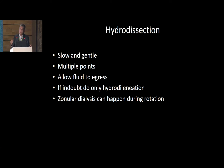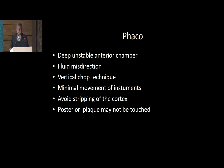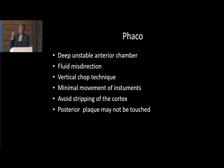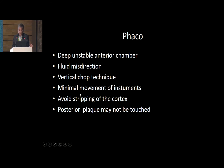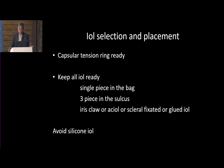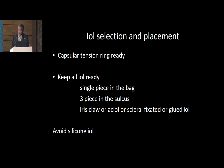Hydrodissection has to be slow and gentle, done at multiple points, and you must allow the fluid to egress so that you don't create too much pressure on the posterior capsule or the zonules. During phacoemulsification, you must keep a deep and stable anterior chamber and avoid deep unstable chambers. Sometimes fluid misdirection can occur — fluid can go through the zonules, go behind, and increase eye pressure. In such cases, take a 30-gauge needle, go into the pars plana, and slightly aspirate the fluid; the pressure comes down and you can proceed. There must be minimal movement of instruments and you should avoid slipping of the cortex. You have to decide which IOL you are going to put — keep a single-piece for in-the-bag implantation ready, a three-piece ready for sulcus implantation, and also an iris-claw or scleral-fixated or glued IOL ready. Avoid silicone IOLs because silicone oil tends to react with silicone IOLs and causes opacification.